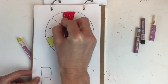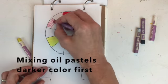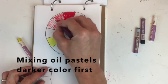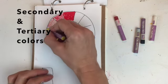My primary colors are every third section on the wheel. So to mix my oil pastels, I need to lay down my darker color first.